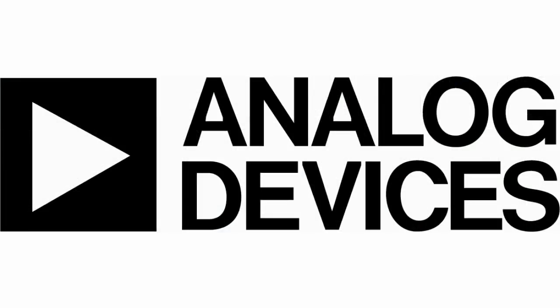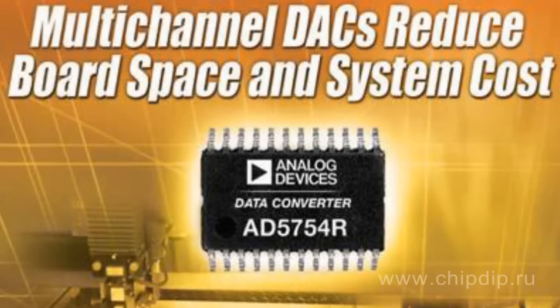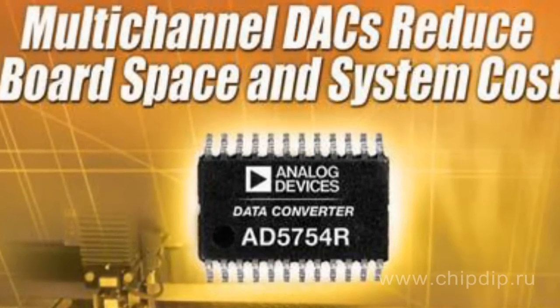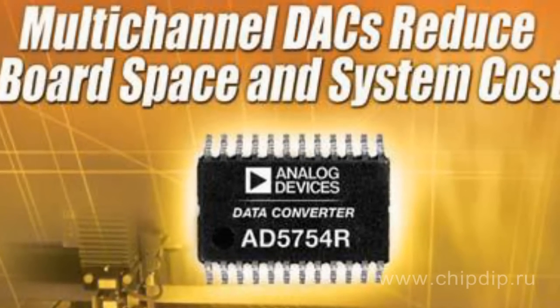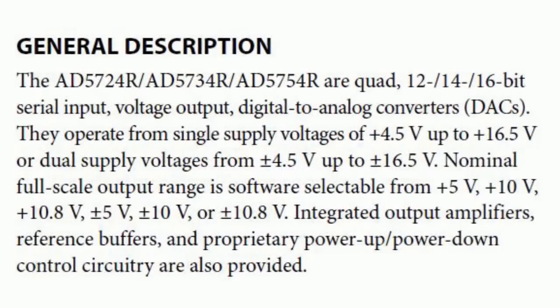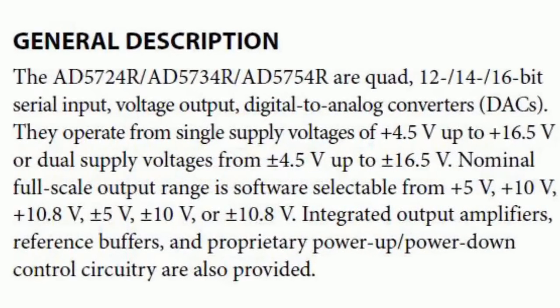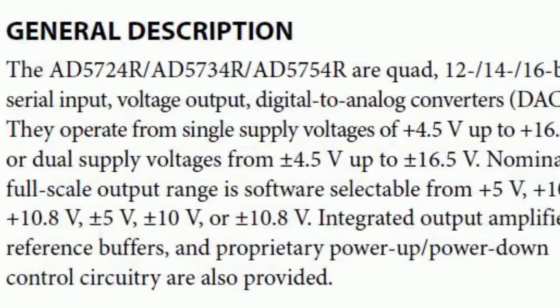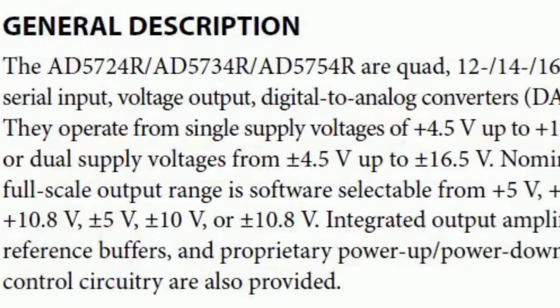AD5754R is a 16-bit quad digital-to-analog converter produced by Analog Devices. It has an output voltage range which can be programmed by the user. The converter belongs to a 16-bit quad digital-to-analog converters family, which includes 2-channel and 4-channel versions with 12-, 14-, and 16-bit resolution. Supply voltage ranges from 4.5 to 16.5 volts or from ±4.5 to ±16.5 volts.